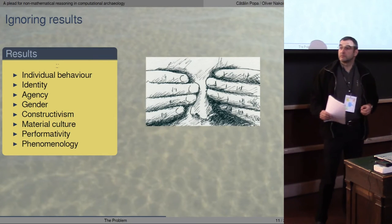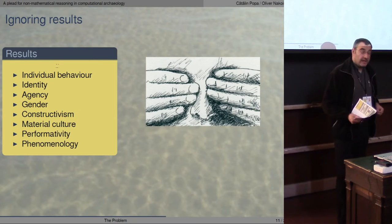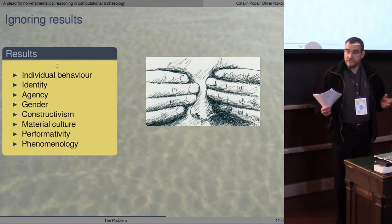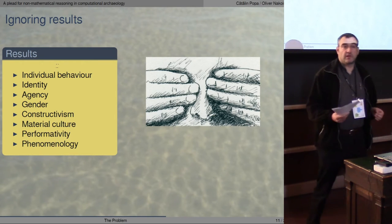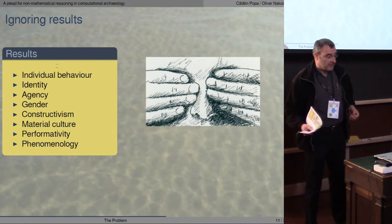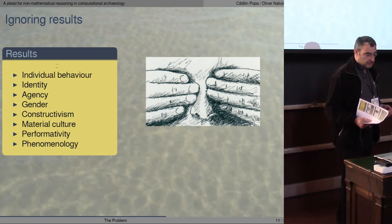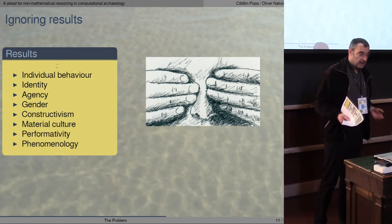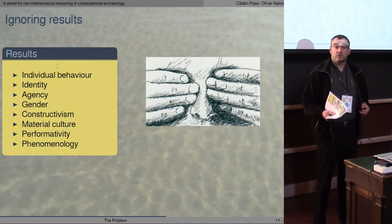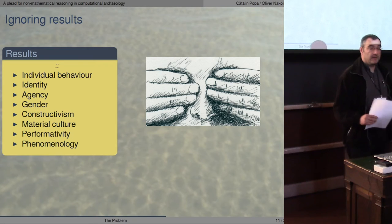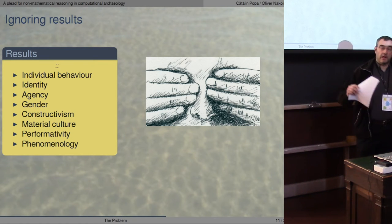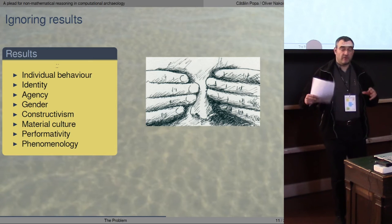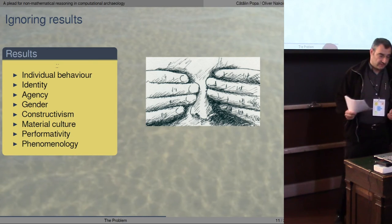We are also ignoring achievements. Theoretical archaeology produces interesting theories about identity, agency, gender, and many other things. We should use those theories and include them in our research process, which is mostly dealing with quantitative methods.